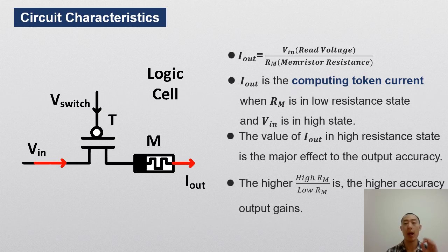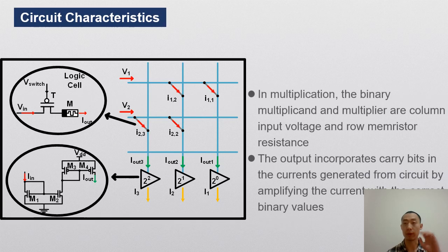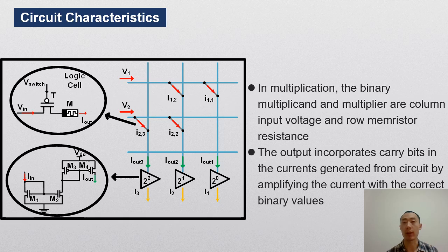And the analog current value is generated by input voltage and the memristor resistance. Thus, under the same input voltage, the higher high over low resistance states difference is, the higher accuracy logic cell gets. The figure on the right side gives a detailed description about the proposed multiplier.